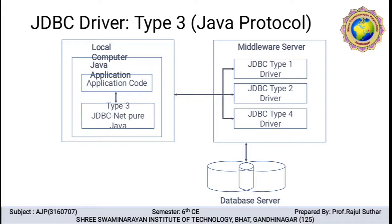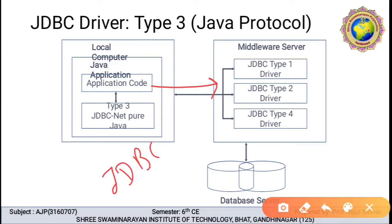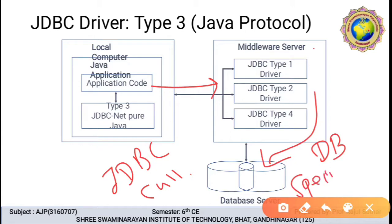Type 3 driver uses a NetCommon Protocol. First of all, the type 3 driver translates the JDBC call from the Java application to the middleware server. The JDBC call is performed from the Java application to the middleware server. After that, the driver communicates with the middleware component or server, and this middleware server converts the call into database-specific calls to connect with the database server.